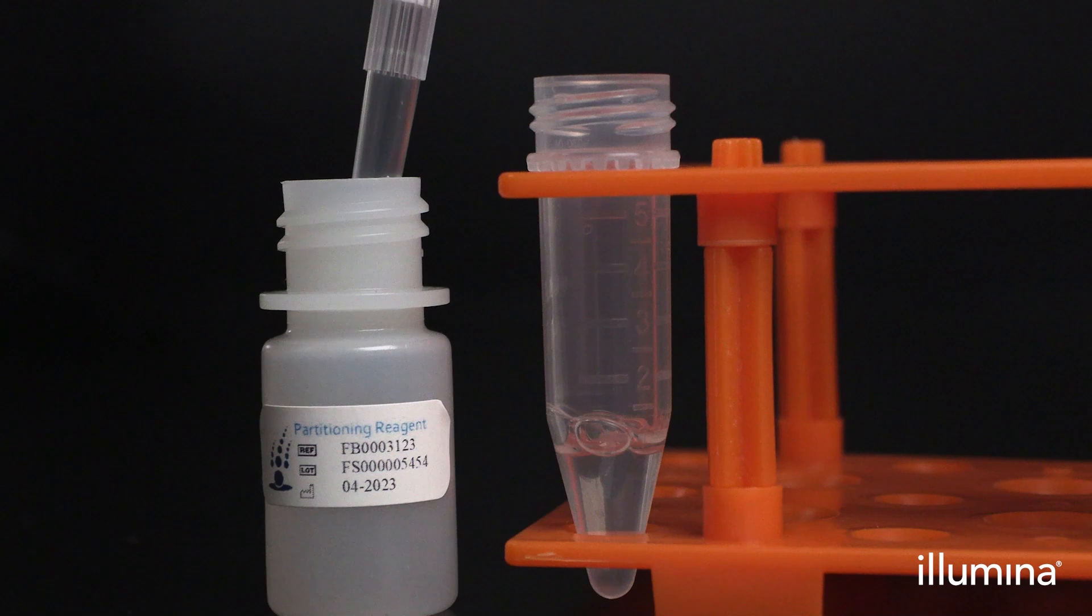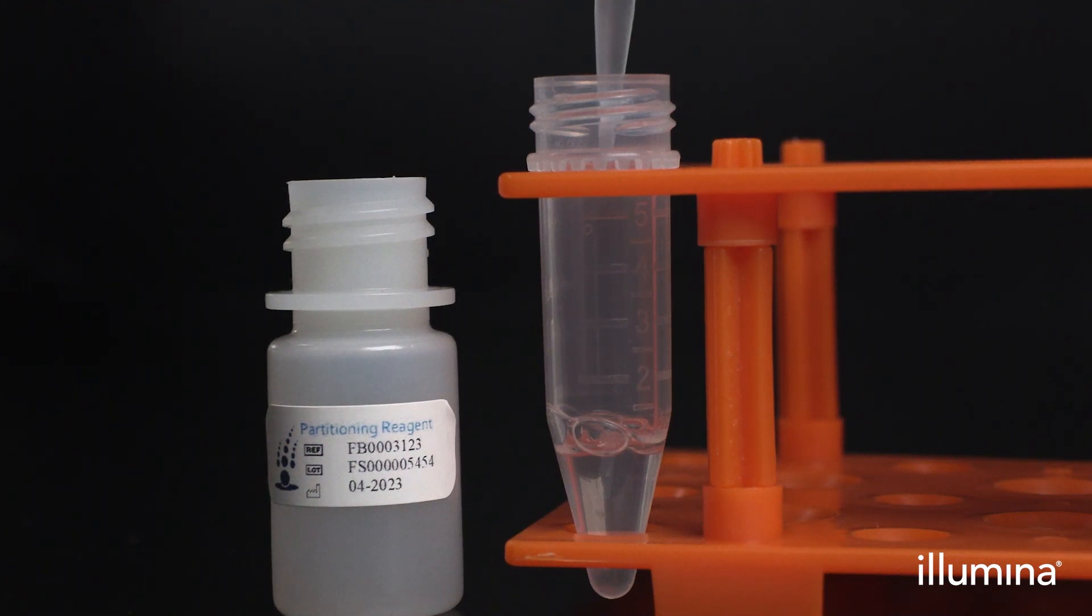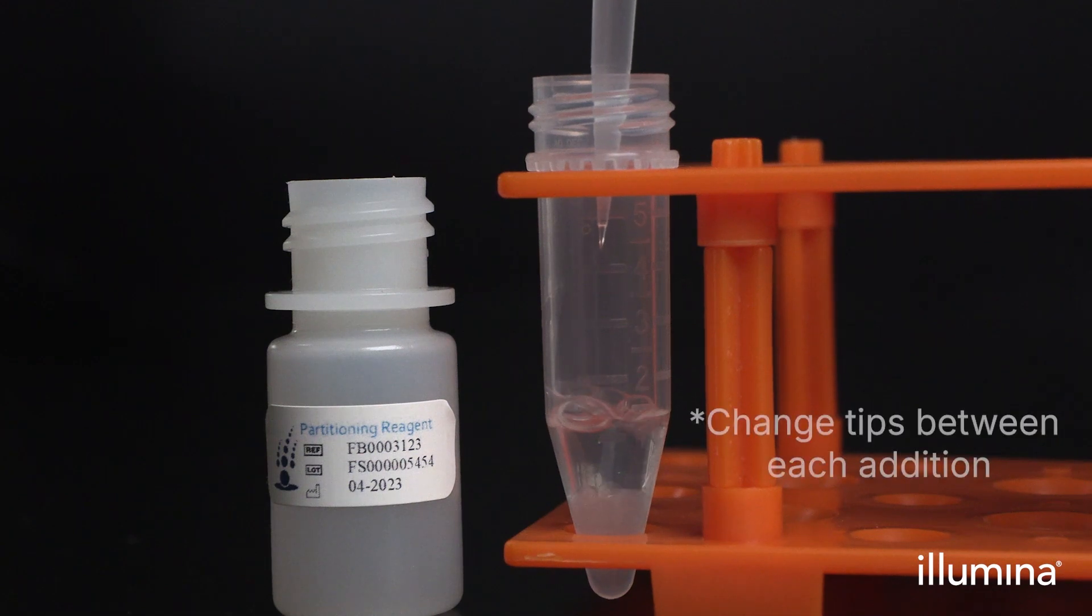For the remaining chemical lysis steps, we recommend processing one sample at a time. Add 2500 microliters of partitioning reagent down the sidewall of one 5 ml tube containing CLB3.